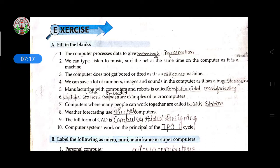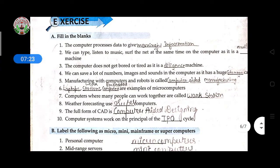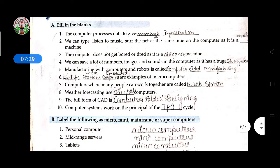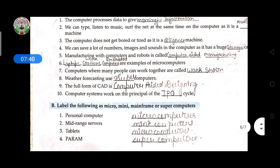Note down these answers. The computer processes data to give meaningful information. We can type, listen to music, surf the net at the same time on computer, it is multitasking machine. The computer does not get bored or tired, it is diligence machine. We can save a lot of numbers, images and sound in computer as it has huge storage capacity.